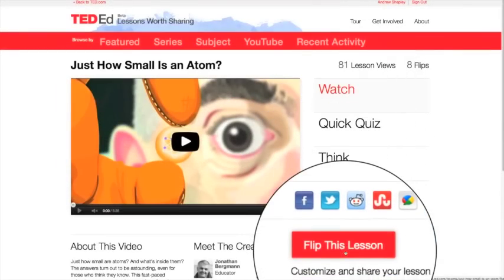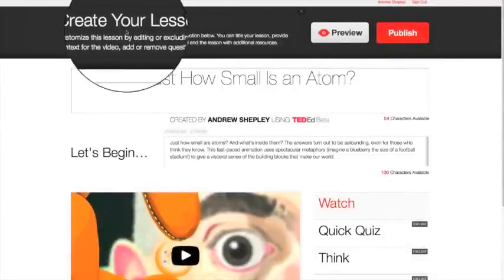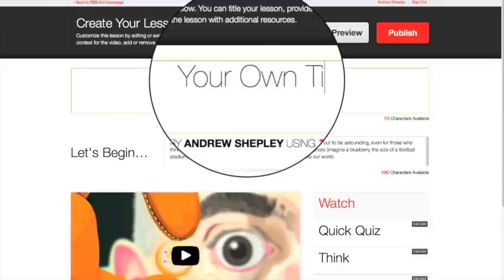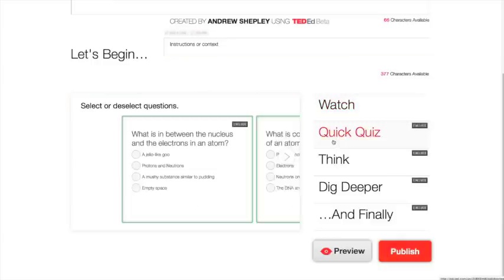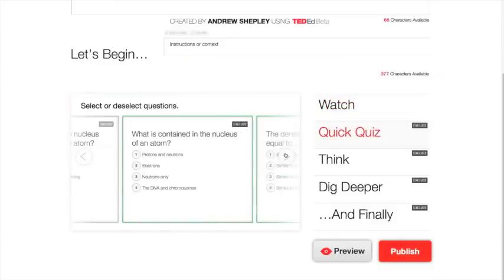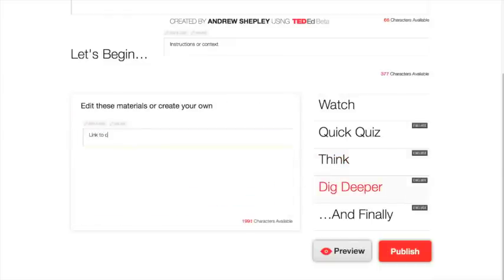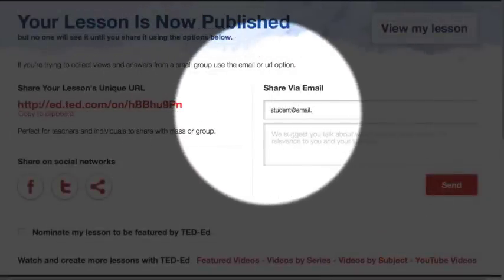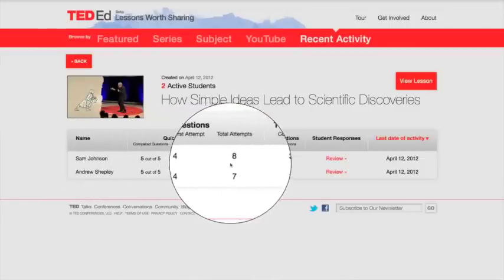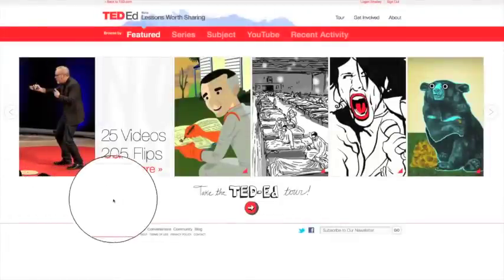And now to one of the most powerful features of the TED Ed website, flipping a lesson. Flipping a featured lesson allows you to edit each of the lesson sections. You can edit the title as it relates to your class. You can use the let's begin section to provide instructions or context for the lesson. You can select or deselect any quick quiz question. In the think section, you can add your own open answer questions. And in the dig deeper section, you can use the resources provided or add your own. When you finish flipping a lesson, it'll publish to a new and unique URL. And because the link is unique, it can measure the progress of any learner you share it with. You can use it to measure participation and the accuracy of any individual student's answers. So that's how you flip a featured TED Ed video. But we've got one more major feature to tell you about.